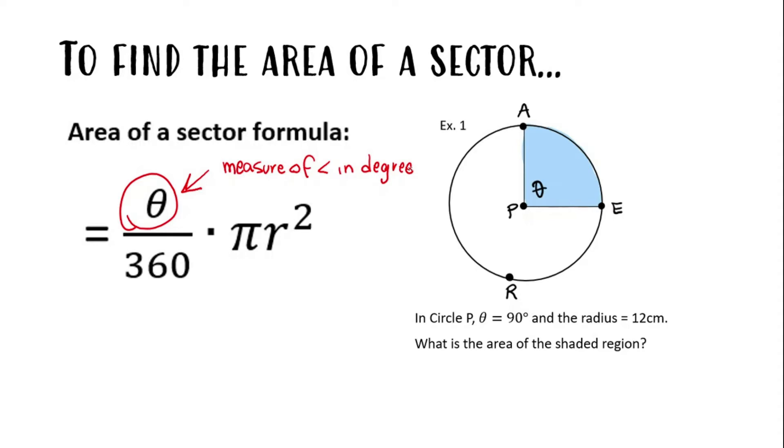We know that r in that formula represents the radius of a circle. And all together, pi r squared represents the area of a circle.